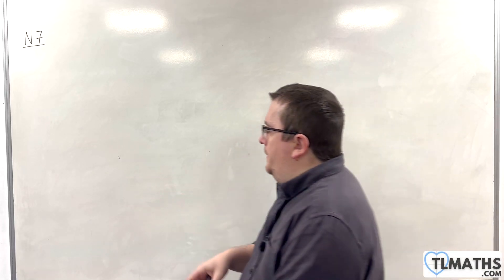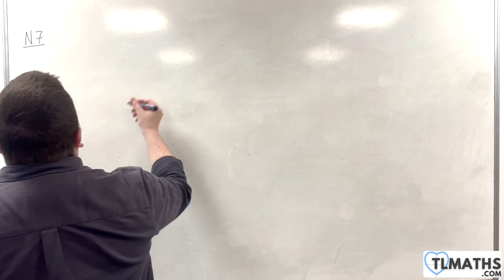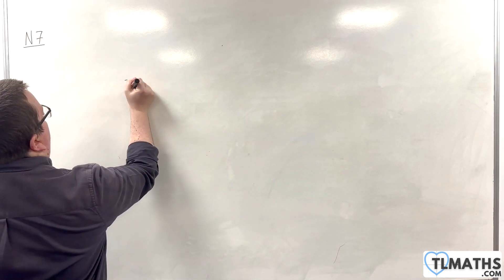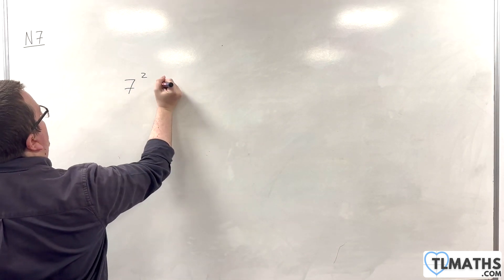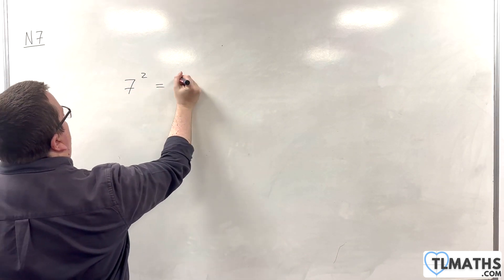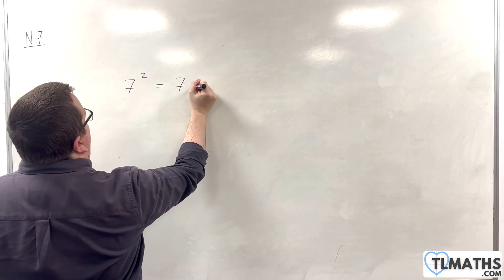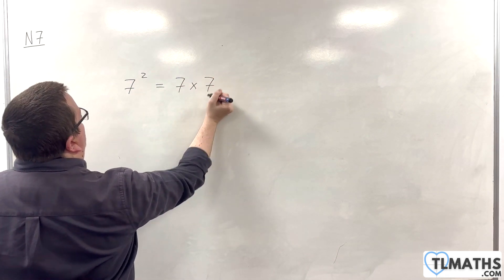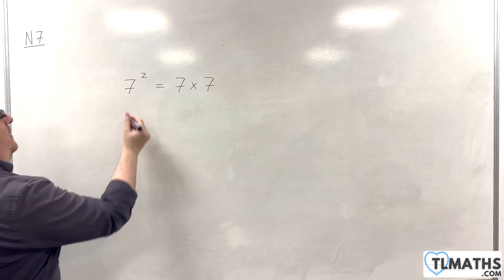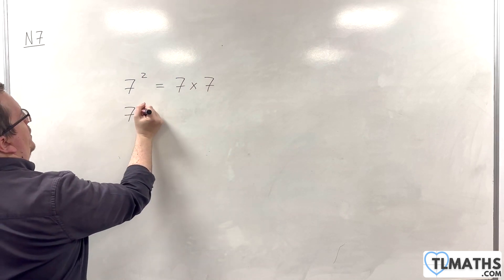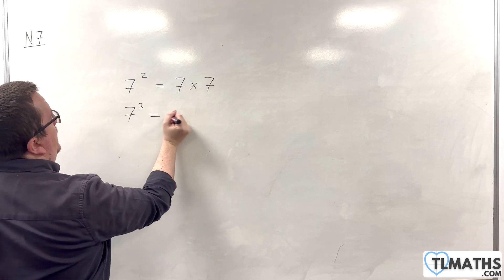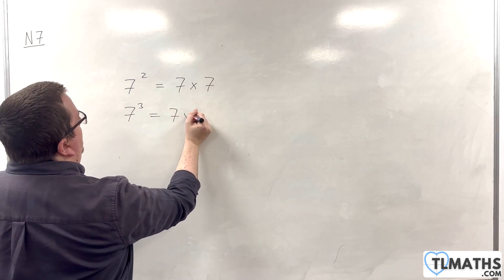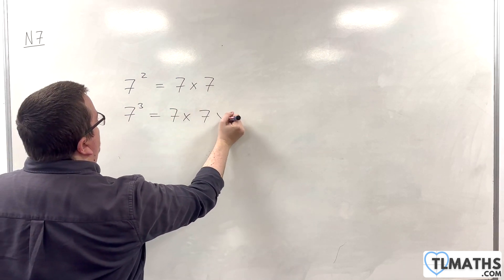At this point, we should understand that if we've got something like 7 squared, we know that means 7 times 7. And if we have 7 cubed, then that is 7 times 7 times 7.